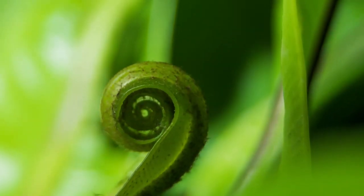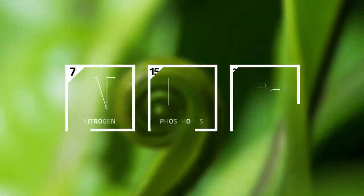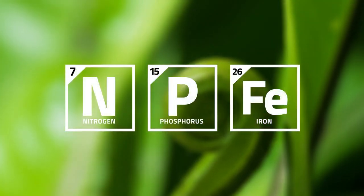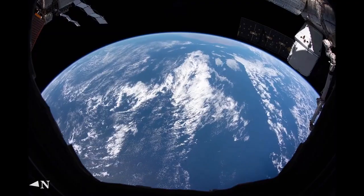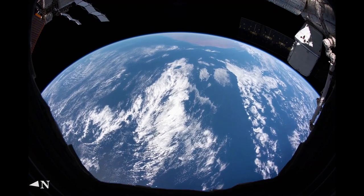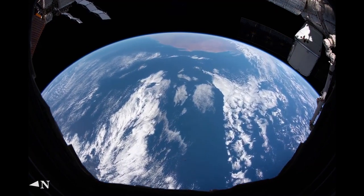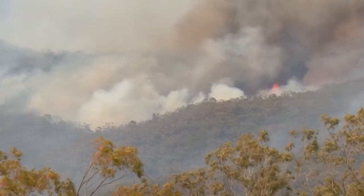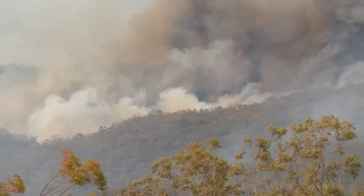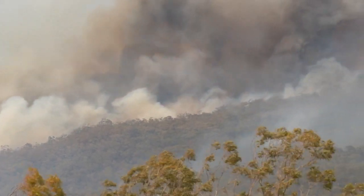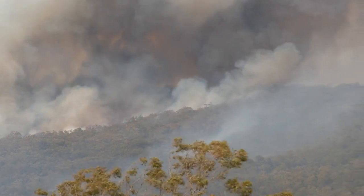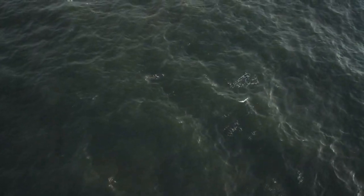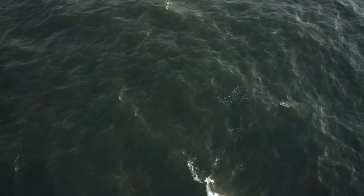Photosynthesis also requires nutrients such as nitrogen, phosphorus, and iron. Without the right proportions of these nutrients, photosynthesis doesn't happen, which can be seen in the iron-limited parts of the ocean, such as far offshore of Australia. Atmospheric aerosols released by fires, however, contain carbon as well as other nutrients essential for plant growth, like iron. When these aerosols are deposited on the ocean surface, these nutrients become available for photosynthesis.